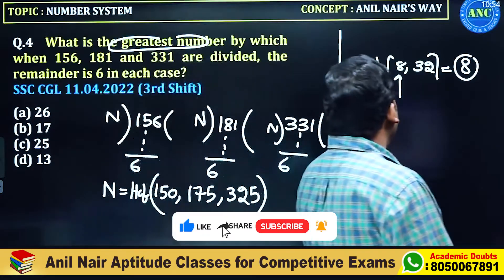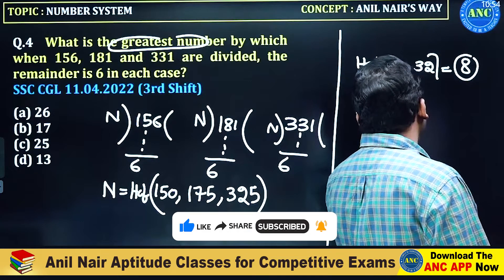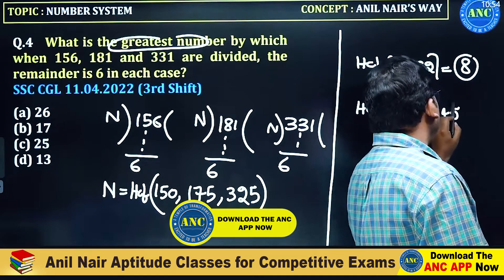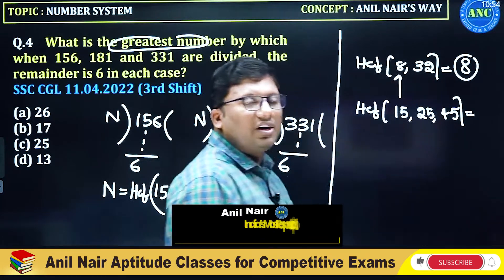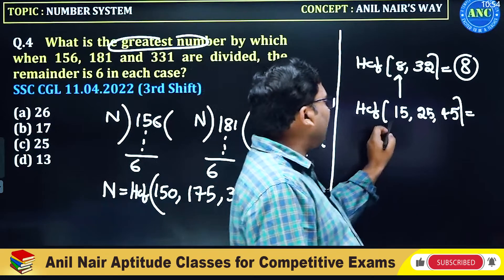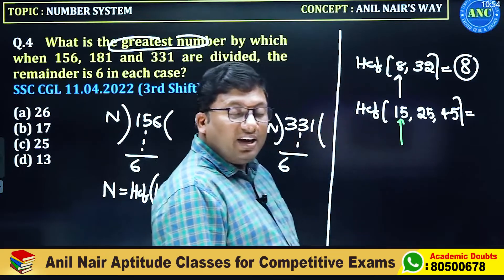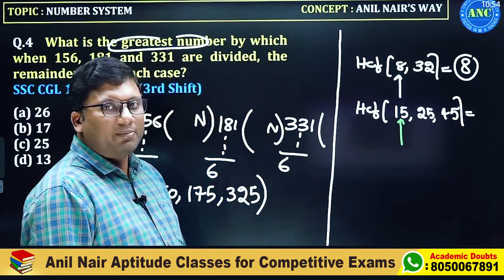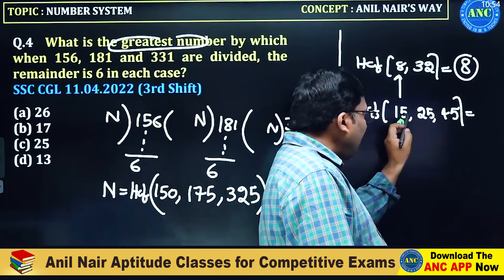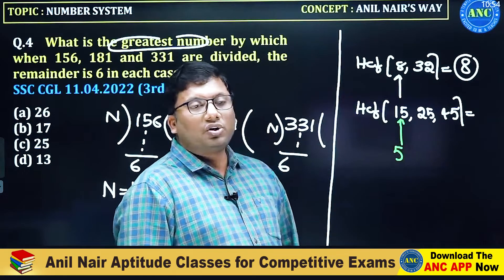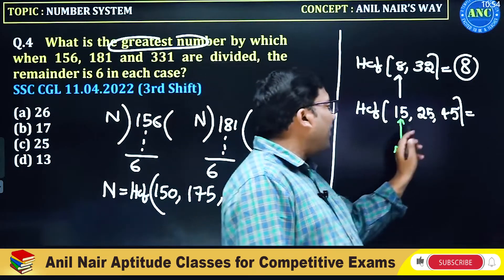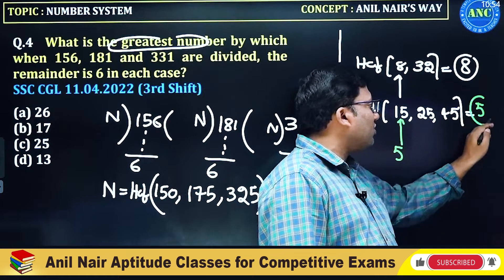If it is not dividing, here is an example: HCF of 15, 25, 45. Whenever you are doing HCF, attention should be on the smallest number, which is 15. Is 15 dividing every number? 25 is not getting divided by 15. So take the factors of 15 — the factor is 5. Is 5 dividing 25? Yes, 5 fives are 25. Is 5 dividing 45? Yes, 5 nines are 45. So the answer for this question is 5.